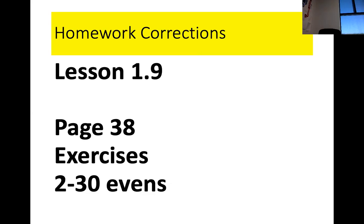Any questions? All right, here we go — 2-30 evens. Number 2 is negative 6. Number 4 is 0. Number 6 is 8. Number 8 is 2. Number 10 is 15.